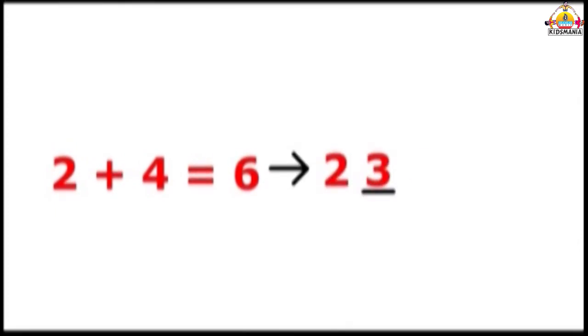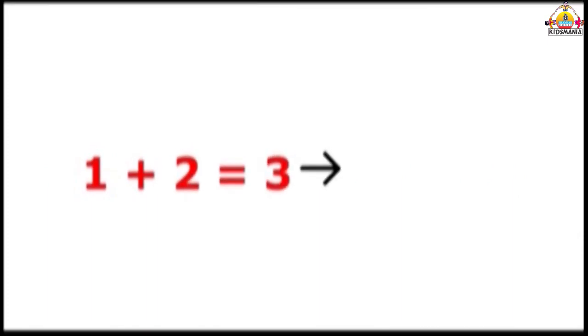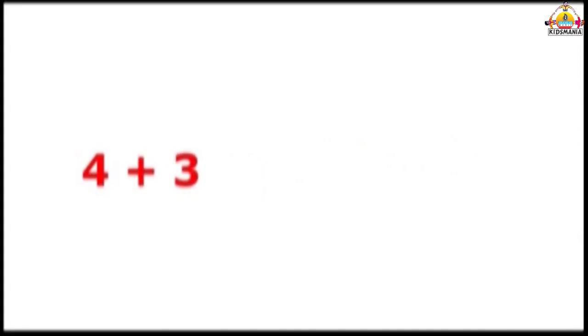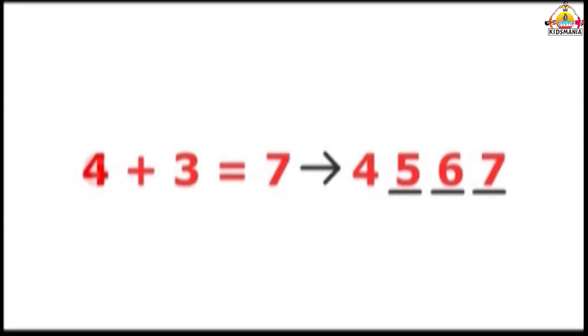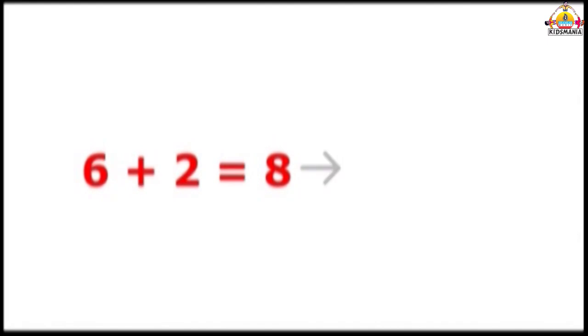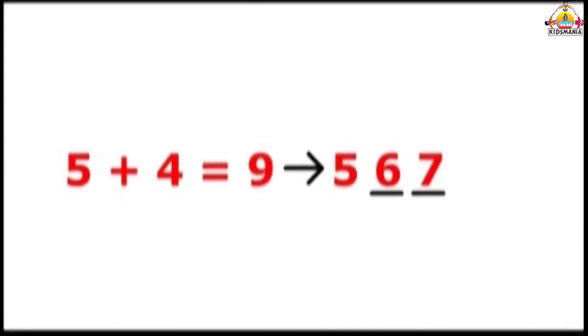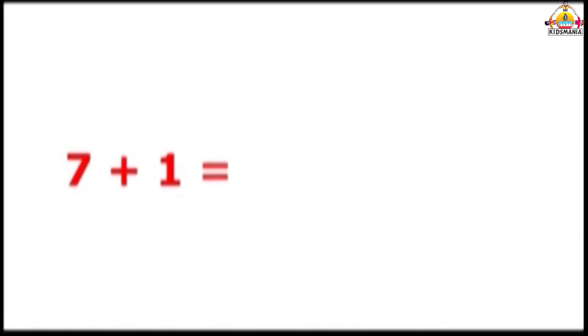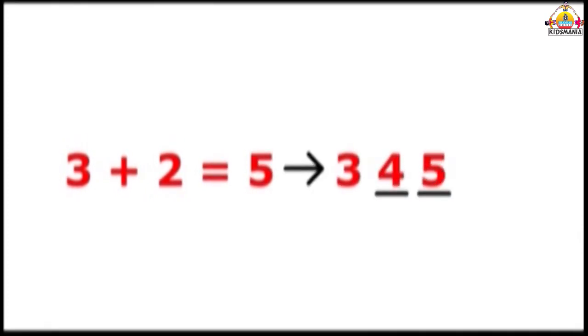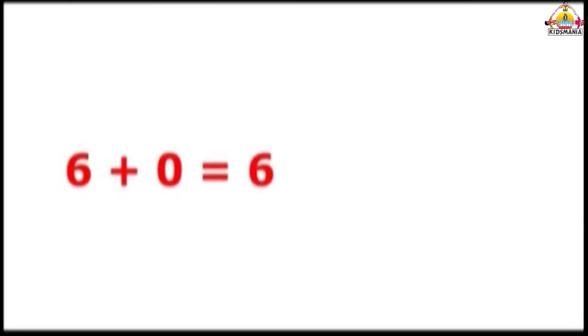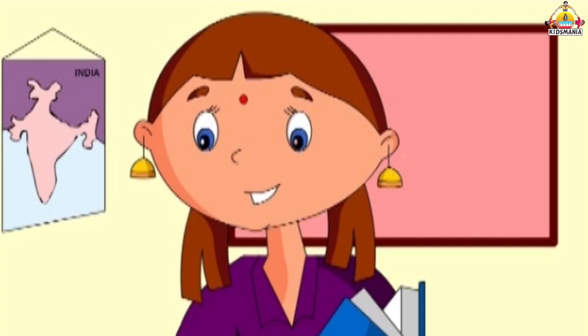Adding by row method. 2 plus 4 is equal to 6, 3, 4, 5, 6. 1 plus 2 is equal to 3, 2, 3. 4 plus 3 is equal to 7, 5, 6, 7. 6 plus 2 is equal to 8, 7, 8. 5 plus 4 is equal to 9, 6, 7, 8, 9. 7 plus 1 is equal to 8, 8. 3 plus 2 is equal to 5, 4, 5. 6 plus 0 is equal to 6. 2 plus 5 is equal to 7, 3, 4, 5, 6, 7. 1 plus 1 is equal to 2.